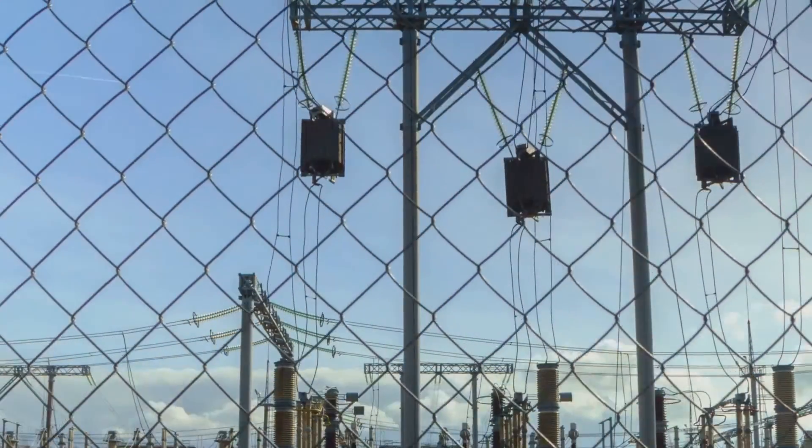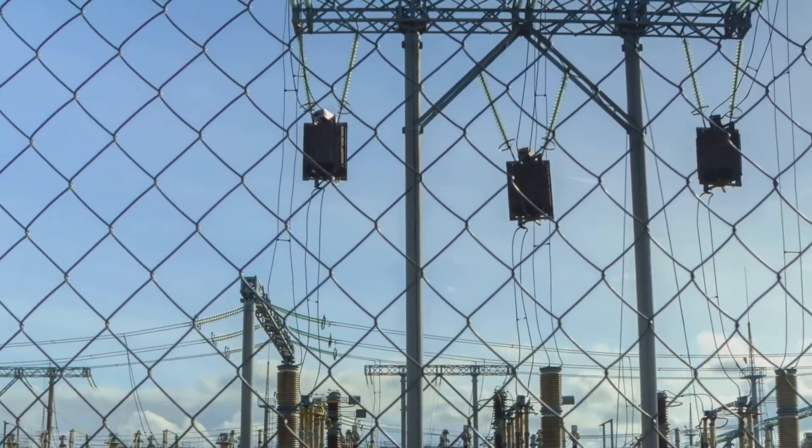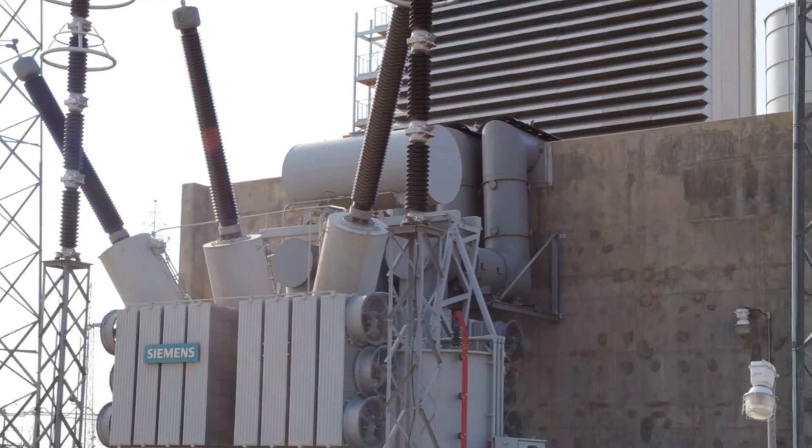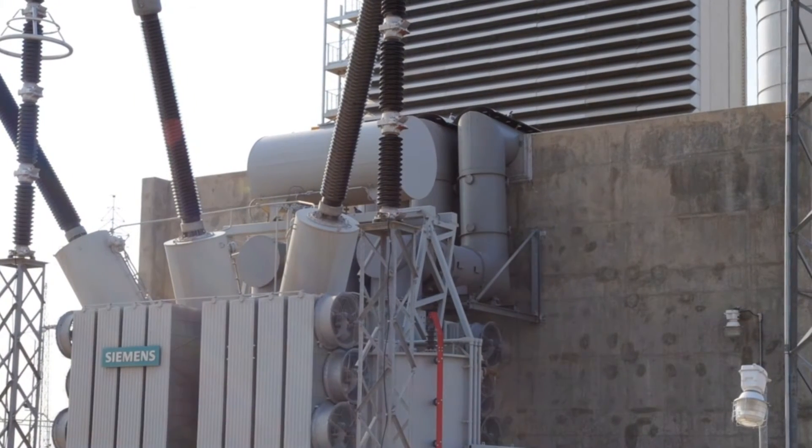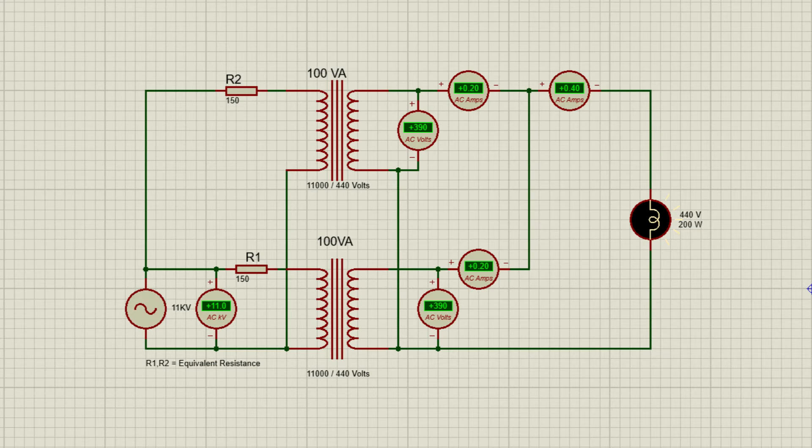And what about the role of percentage impedance in the parallel operation of transformers? Well, transformers often operate in parallel to maximize their utility. In an ideal world, when transformers run side by side, they should share the load equally to prevent any unnecessary circulation of current from one transformer to another.